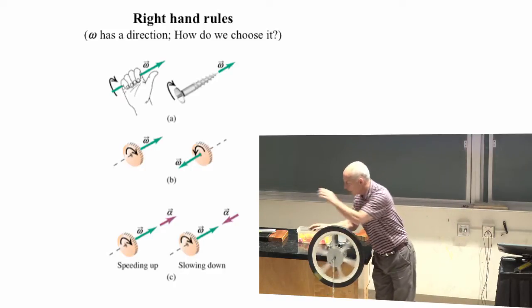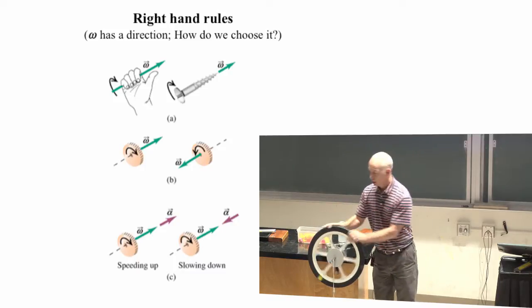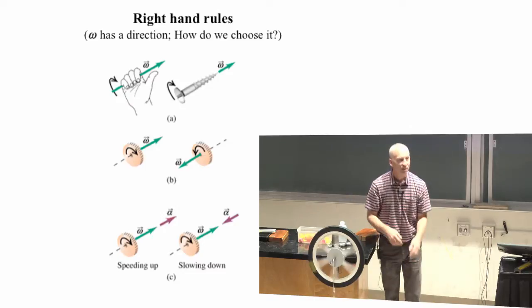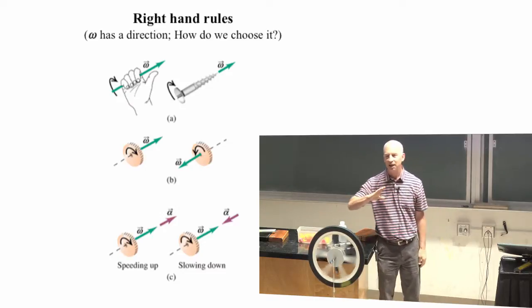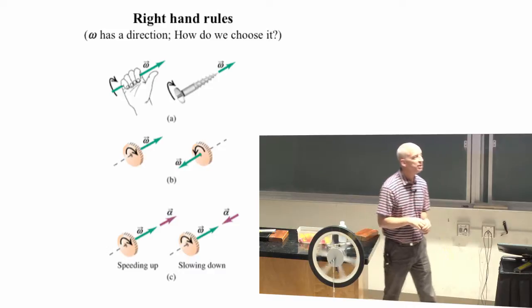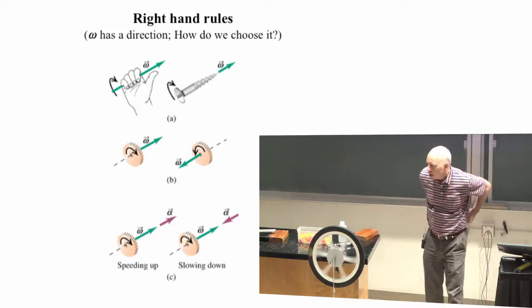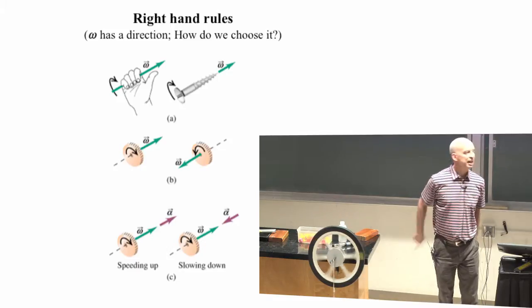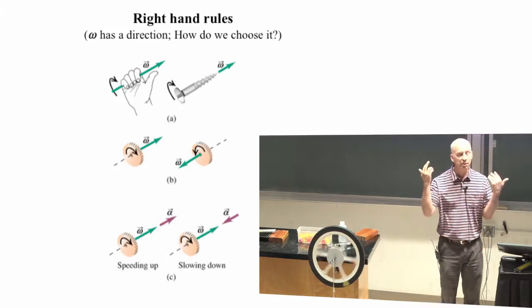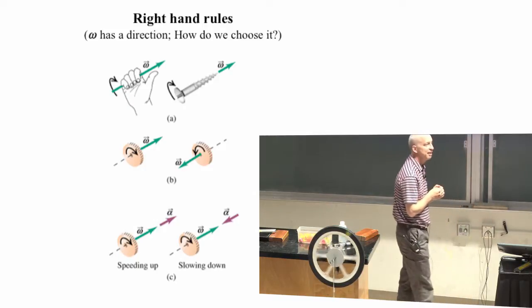We choose an angular velocity vector that points toward you. Not surprisingly, what about the angular velocity vector here? Points the other way. If it's rotating the other way, it points the other way. You might say, well, nothing's really moving in those directions. And you would be right. This is not a velocity vector. It's an angular velocity vector.